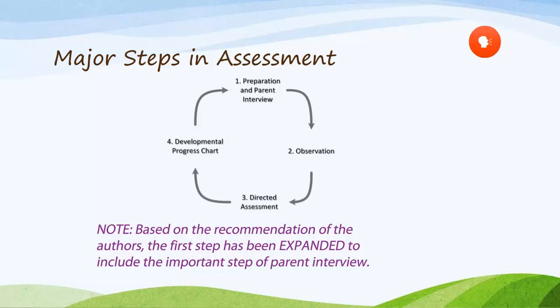Further information on scoring will be reviewed later. Finally, the fourth step is to complete the developmental progress chart, to visually display the child's current level of functioning. This chart is helpful for families and providers to have a visual depiction of the child's assessments and progress over time.